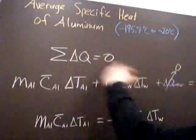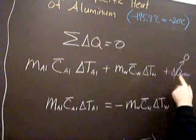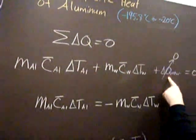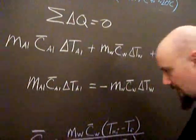Well, it starts off the same. Conservation of energy, we have our term for the aluminum, term for the water, we're letting delta Q equals zero, and then algebra, and then we get this.